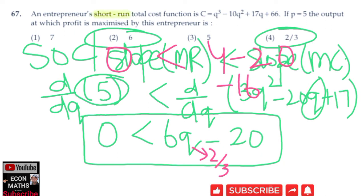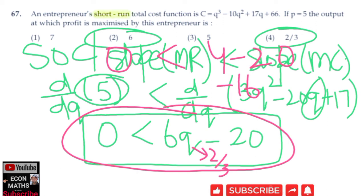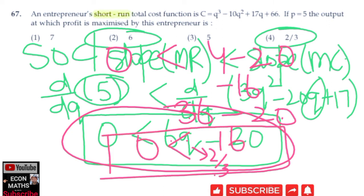Now if Q = 6, then 6(6) - 20 = 36 - 20 = 16, which is greater than 0. So the second order condition — that the slope of marginal revenue should be less than the slope of marginal cost — is satisfied only when Q = 6. Therefore, the correct answer to this question is Q = 6.